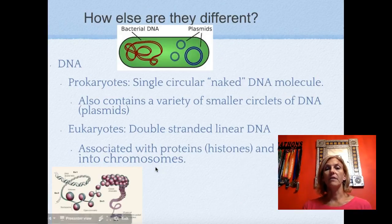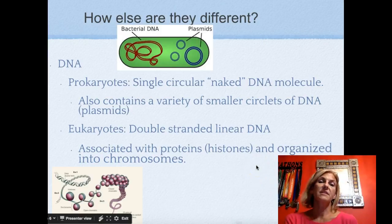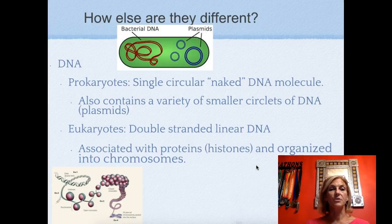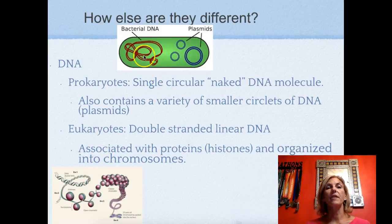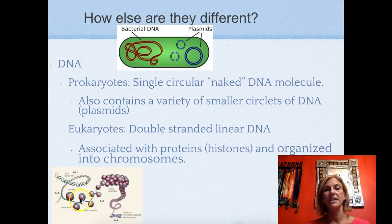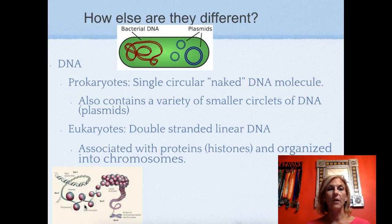How are prokaryotes and eukaryotes different? Let's look at the DNA in the two cells. In the prokaryote you can see circular DNA, while the eukaryote has linear DNA. Another difference is that eukaryotic DNA is double-stranded and wrapped around proteins called histones, whereas the prokaryotic cell's DNA is considered 'naked' because it's not wrapped around histones.